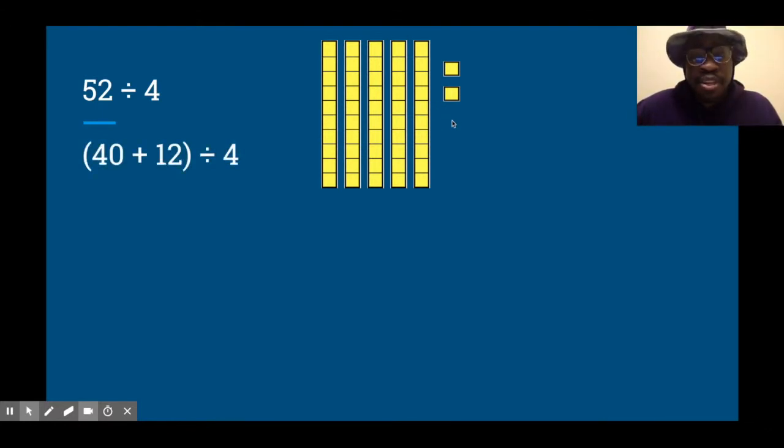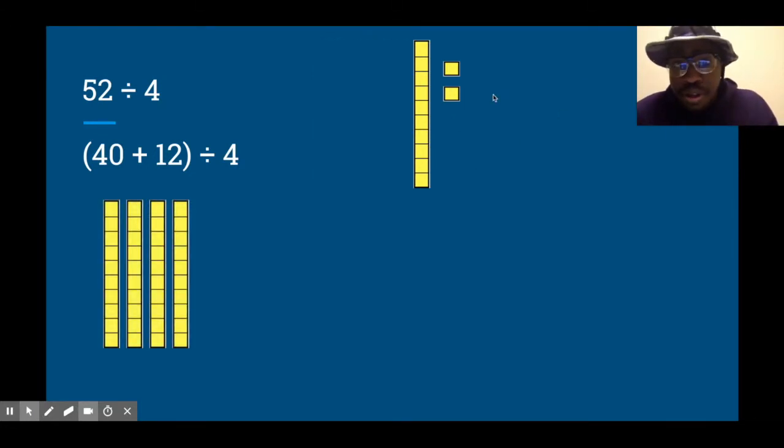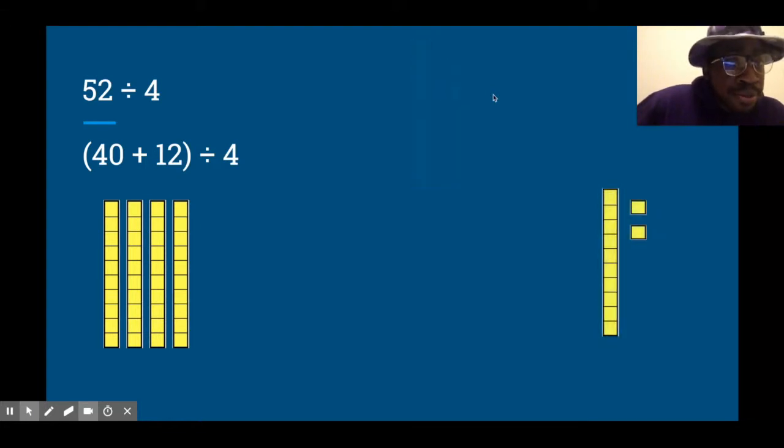So I got this model here. I'm going to split it up - 40 on that side and then 12 on this side. Now that there's smaller numbers, I think I can do this division problem a lot easier. You might see why I picked these numbers, 40 and 12, since I'm dividing by 4.